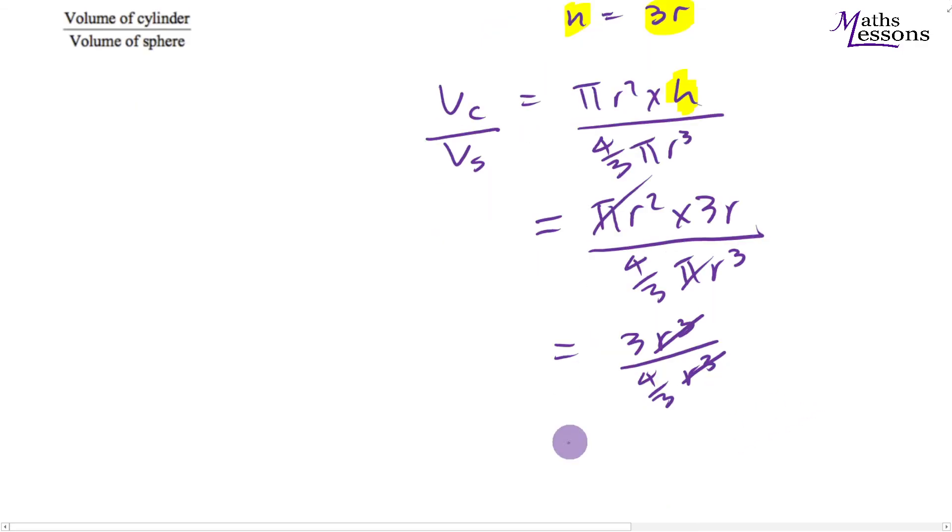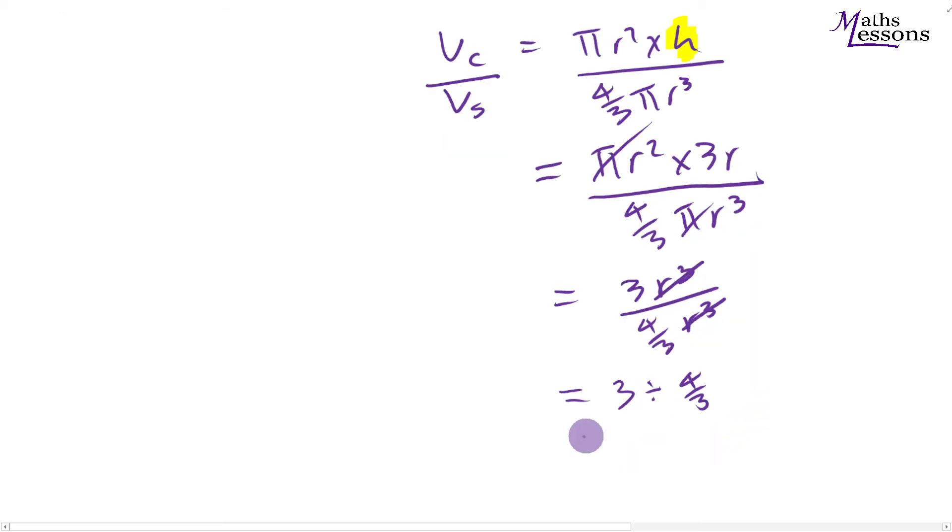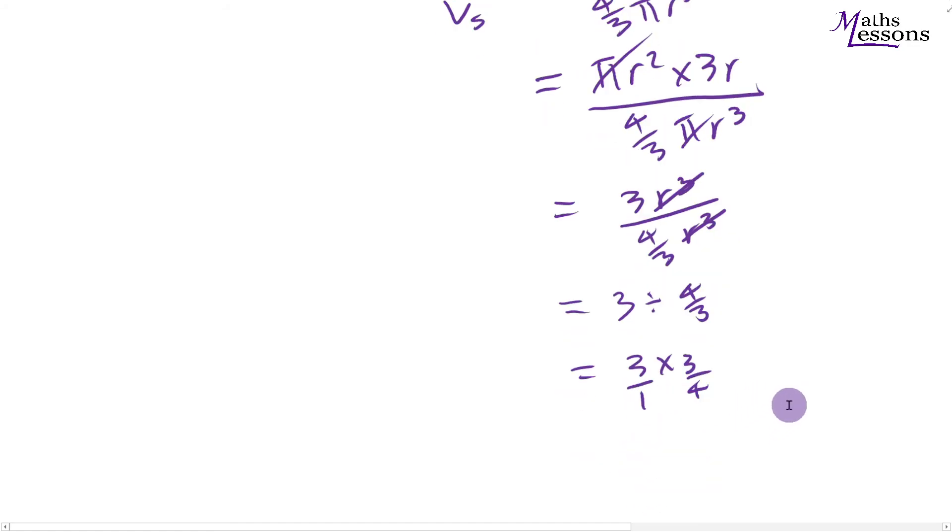So that leaves me with 3 divided by 4 thirds. When you're dividing by fractions, it's a good idea to write it out like this because then you spot that you get 3 times 3 over 4. And remember, 3 is just 3 over 1. Multiply across the top, you get 9. Multiply across the bottom, you get 4.